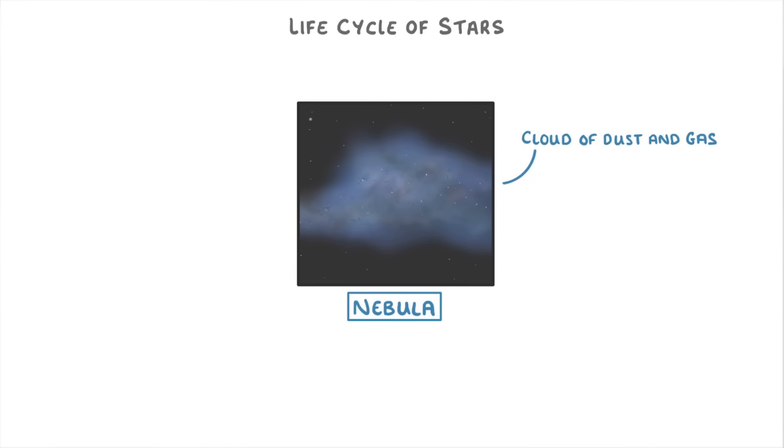Over time, the attractive force of gravity pulls the dust and gas together to form a structure called a protostar. And as more and more particles collide and join the protostar, it gets bigger and bigger. And so its force of gravity gets even stronger, which allows it to attract ever more dust and gas.